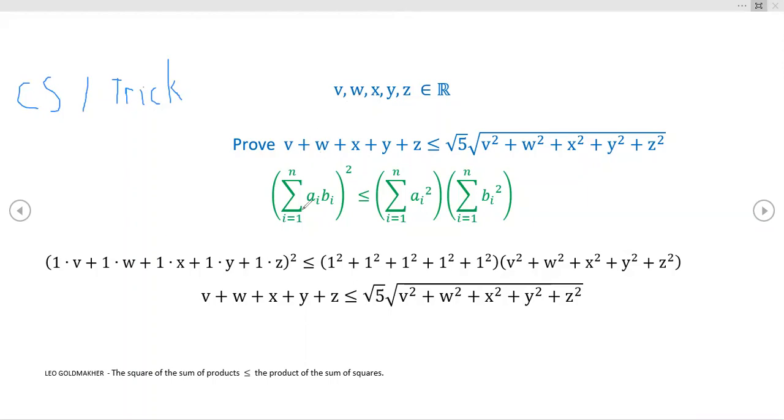This result holds for all real a_i, b_i, all real and probably all complex. So that means you can pick whatever you want. It's for all, it's a universal quantifier sort of thing.